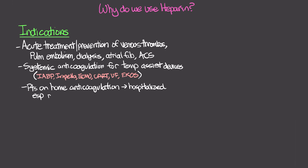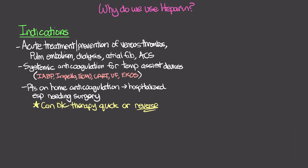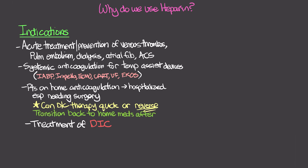Heparin is also used in patients who are on anticoagulation at home — for example, on Coumadin for a chronic condition — and are hospitalized, especially if they need surgery. This allows us to quickly discontinue therapy. We can reverse heparin easily, transition patients from other anticoagulants that don't have reversals, stop or reverse it for surgery, then restart as soon as it's safe and transition them back to their home medication.